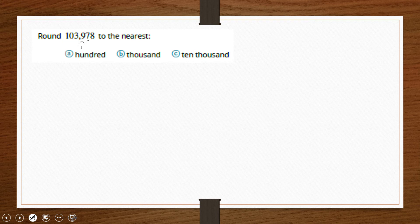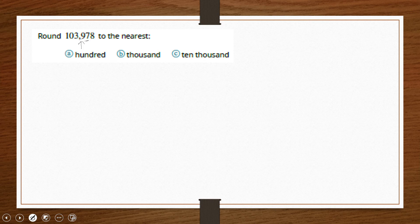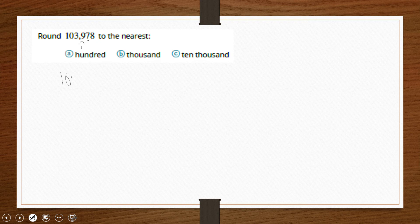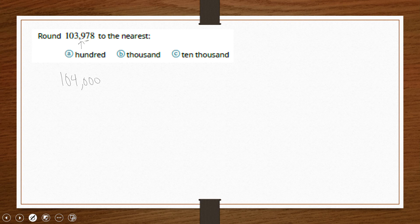For part a, we can see that the digit to the right of the place value we're interested in rounding to is a seven, which means we are going to round up. So 103,978 is closer to 104,000. If we round, we will be going up. So this would give us 104,000.